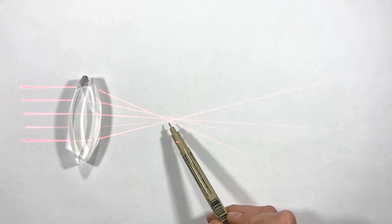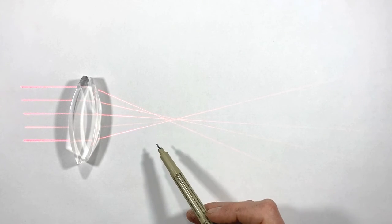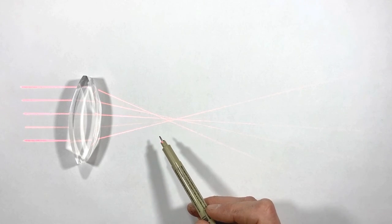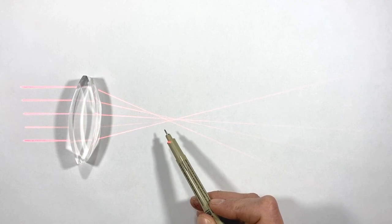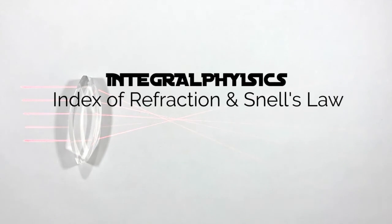And because of this, light can be focused to a point. But how and why light is focused to a point as it passes through a lens is a topic for a whole other video. So on that note, that's all for now.